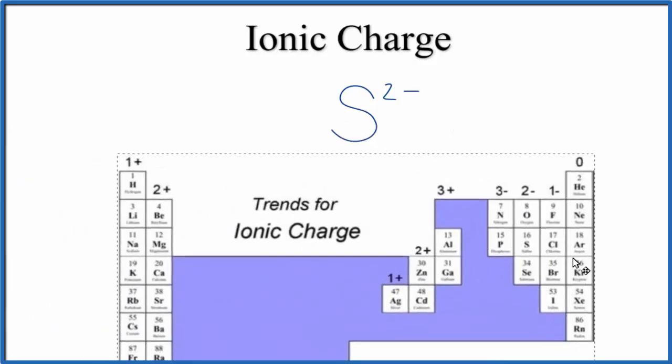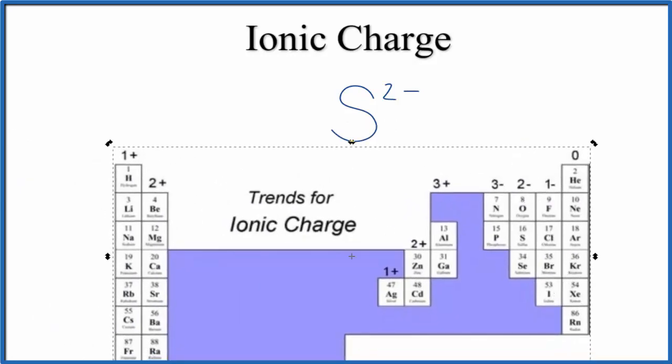So either way, you can use the periodic table, and you can look at the charge, the trend for ionic charge, to find the ionic charge on sulfur, or you can use electron configurations. Either way, sulfur, the ionic charge, is 2 minus.